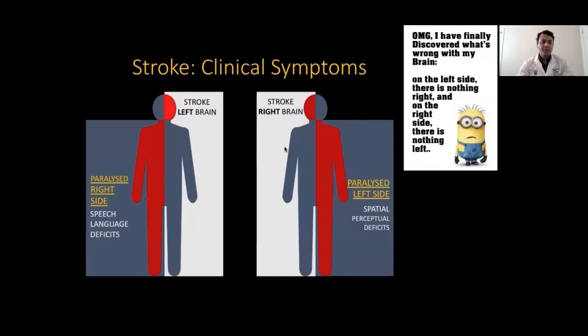We all know the basic stroke symptoms. The left side of the brain controls the right side of the body, and the right side of the brain controls the left side of the body. The dominance of the hemisphere is decided by which area controls language. In right-handed people, the left hemisphere is dominant, and surprisingly, in most left-handed people, the left hemisphere is also dominant. Hence, a stroke in the left dominant hemisphere usually leads to aphasia. A stroke in the right hemisphere usually affects spatial orientation, and these patients tend to neglect their left side, looking away from the affected side.